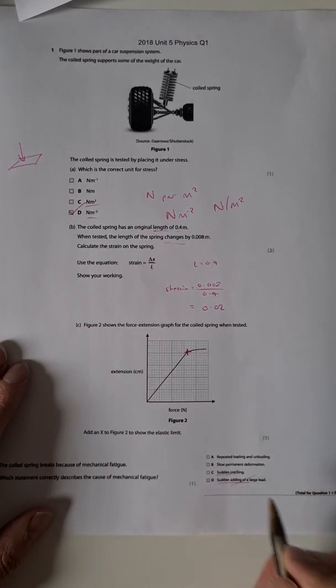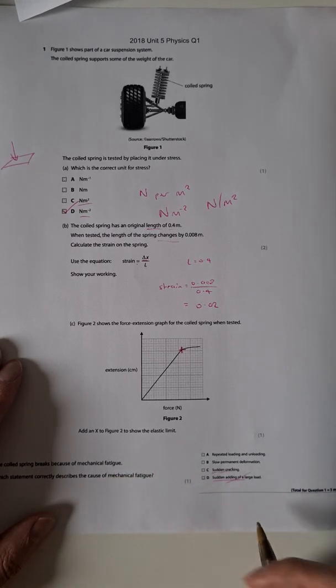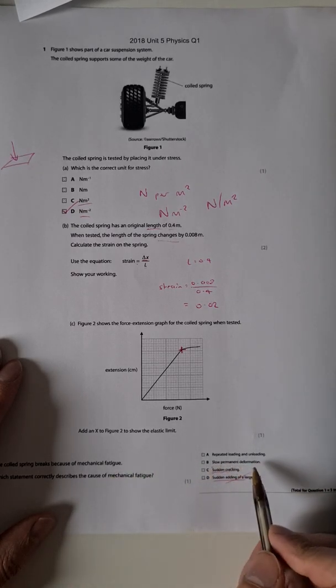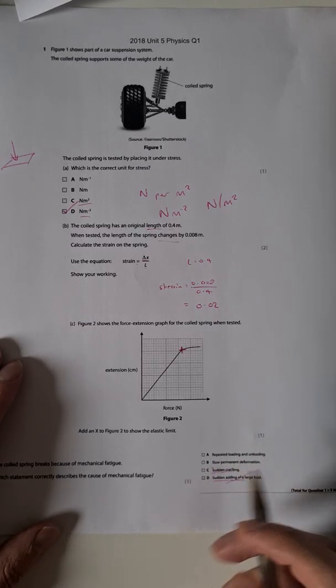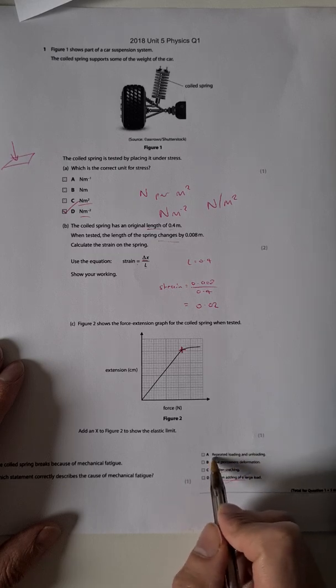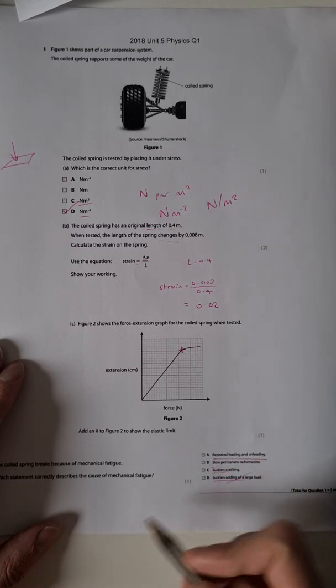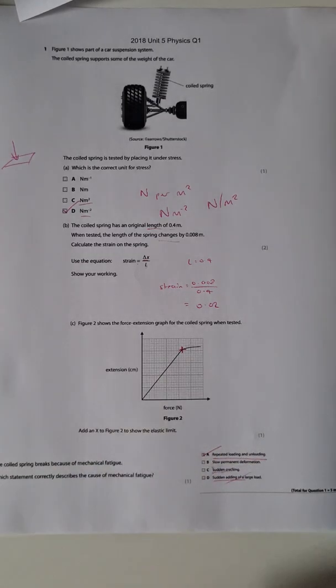I'm going to cross them out because they sound instantaneous when fatigue is over a long time. Slow permanent deformation is just kind of losing its stress, so B kind of fits all right but actually on this one fatigue is constant use - you get tired from constant use - and it will be repeated loading and unloading. So A.